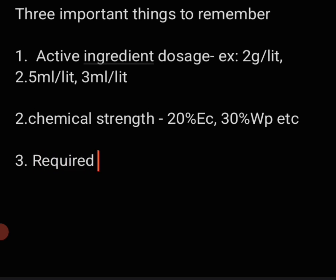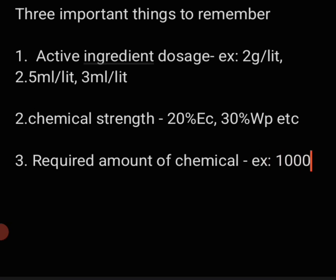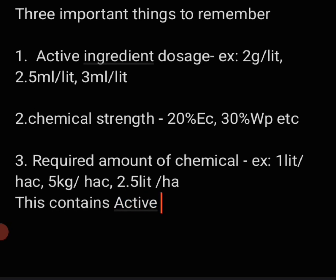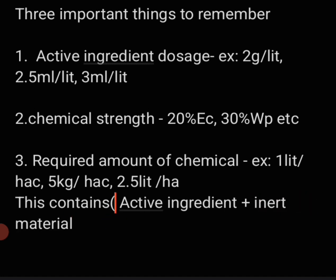The second thing you need to know is the chemical strength. Chemical strength is nothing but the formulation. On the pesticide box, you will see whether it is 20% EC or 30% WP. If it is 20% EC, that means 20% of the toxin is present in that pesticide and the remaining 80% is the inert material. If it is 30% WP, then 30% of the toxin is present and the remaining 70% is the inert material.